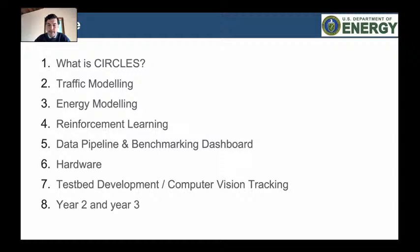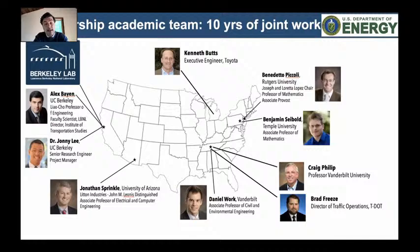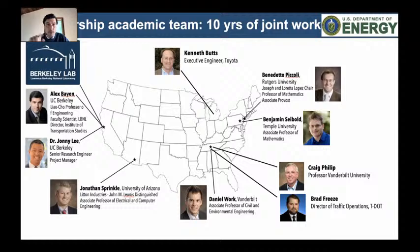We're a consortium of five universities and now three automakers, growing in size almost every month. The lead campus is UC Berkeley, but we're working with University of Arizona, Professor Sprinkle recently moved to Vanderbilt with Professor Work, Rutgers with Professor Piccoli, and Temple with Professor Siebold. We have lots of different partners, in particular DOTs. The Tennessee DOT is a particularly impressive partner — they're building the gigantic testbed we're using for the work. The California Department of Transportation is also a big asset. The work is done by students on the five campuses, as well as people at Toyota and soon Nissan and GM.